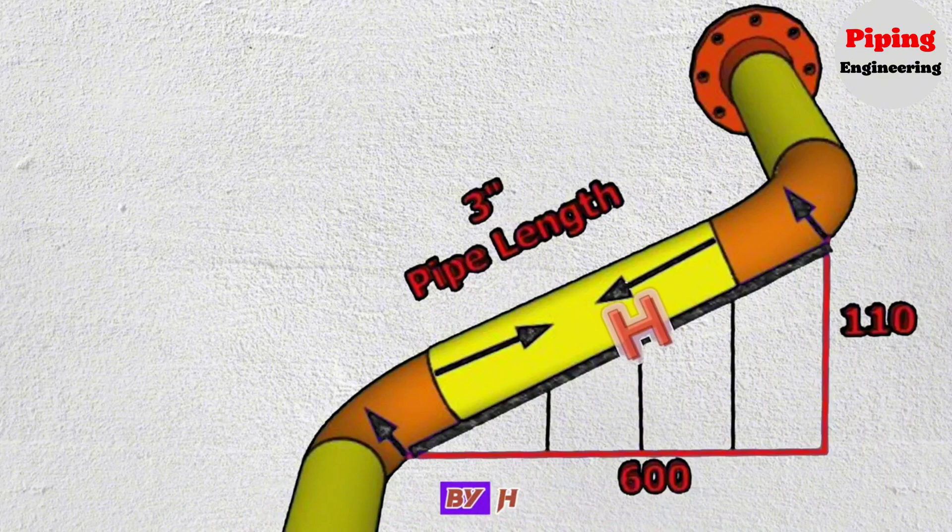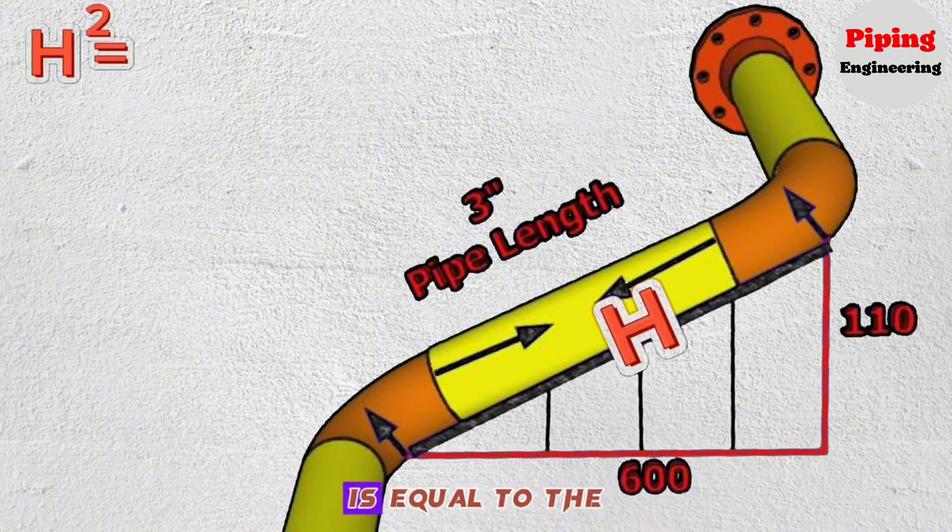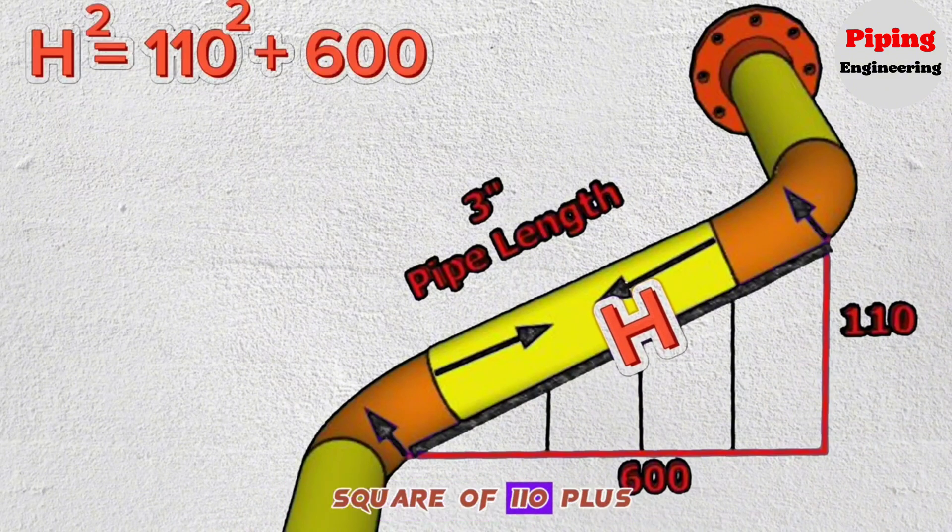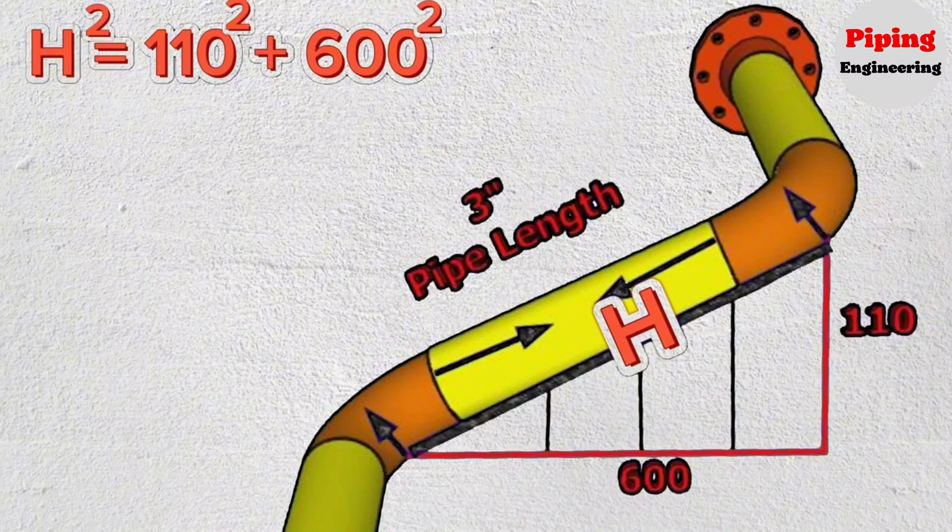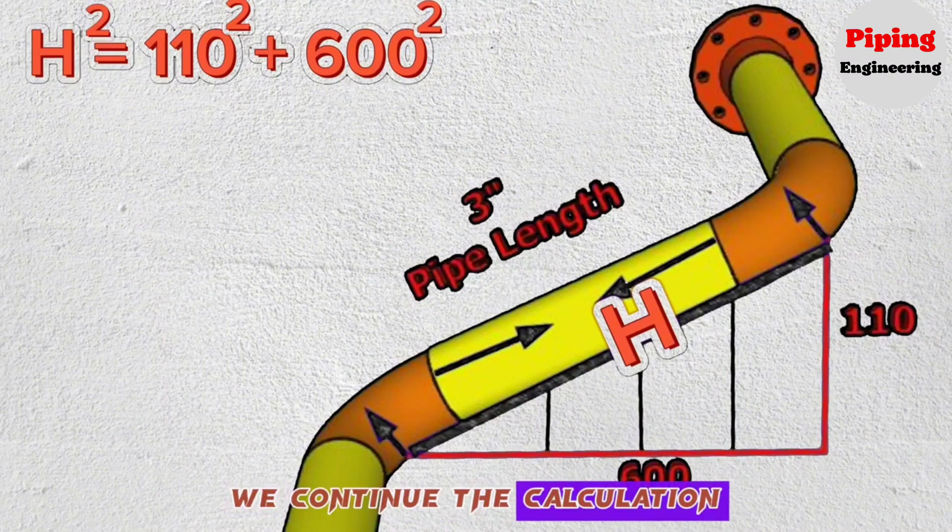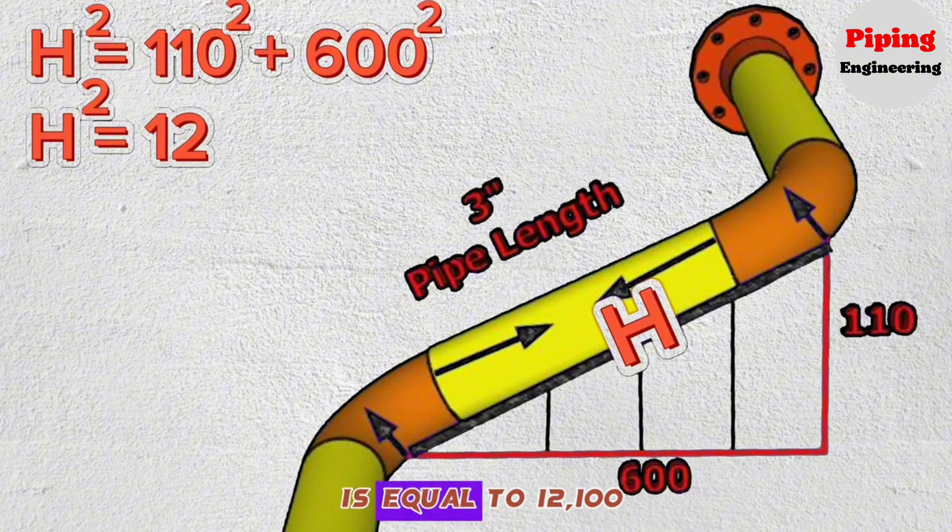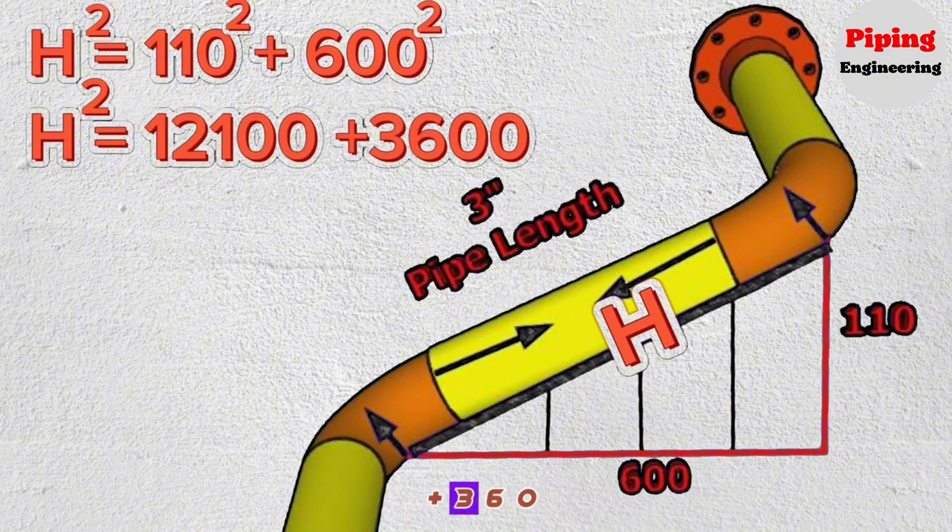If we denote hypotenuse by H, then the square of H is equal to the square of 110 plus the square of 600. We continue the calculation. The square of H is equal to 12,100 plus 360,000.